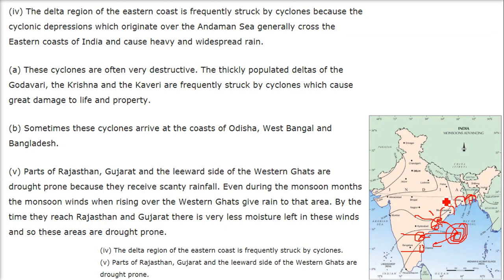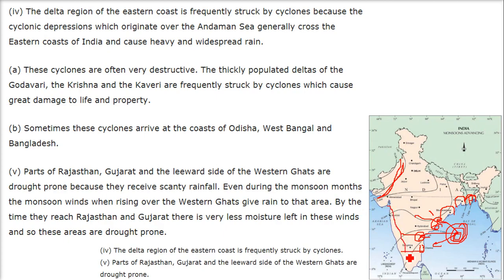Parts of Rajasthan, Gujarat, and the leeward side of the Western Ghats are drought prone because they receive scanty rainfall. Even during the monsoon months, when the monsoon winds rise over the Western Ghats they give rain to the windward side. By the time they reach the leeward side, they have less moisture left, so these areas are drought prone.